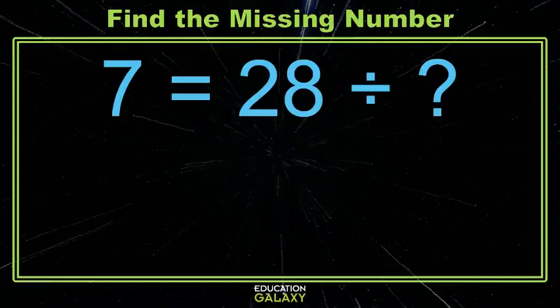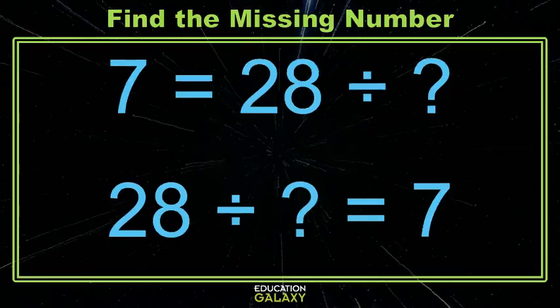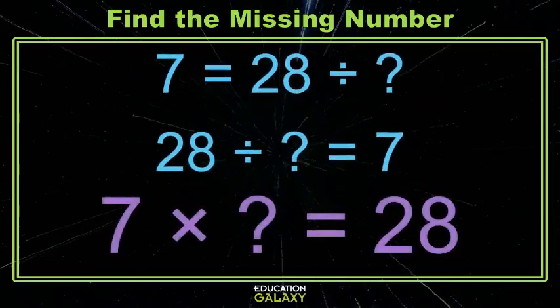And maybe you don't even like the way this is written. Some of you like it written better this way. Either way, doesn't matter. As long as you remember that multiplication and division are related, such that if 28 divided by something equals 7, then 7 times that something equals 28.